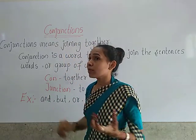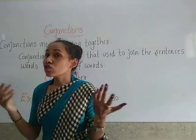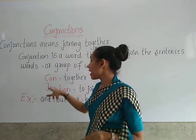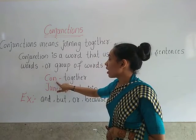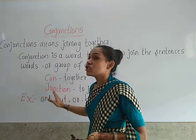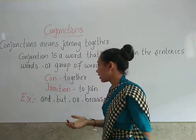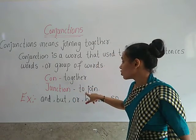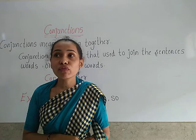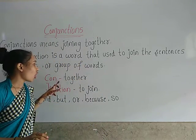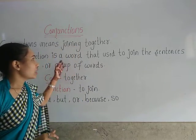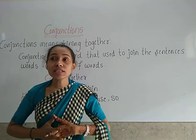Conjunctions mean joining together. In the word itself, the meaning is there: C-O-N, 'con' means together. And 'junction' — junction means to join. So conjunction together means to join together. Conjunctions are used to join words, group of words, or sentences.